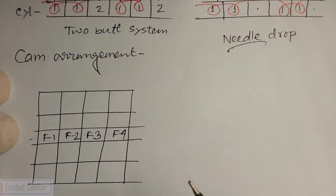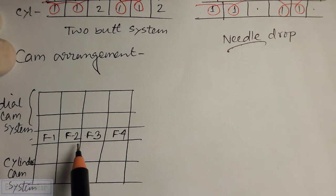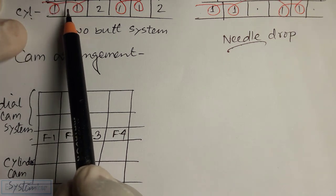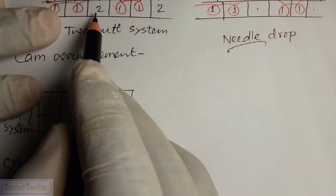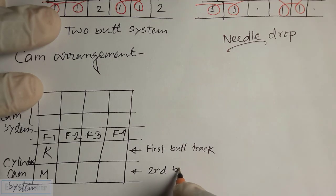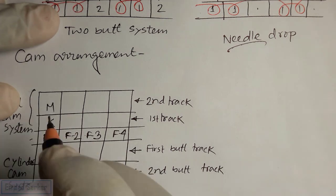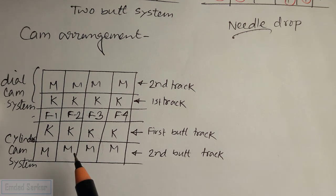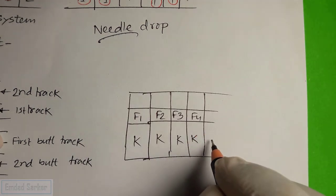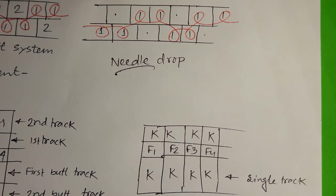In the case of the two-butt system, the cam arrangement or feeder — these are the cylinder cam system. In the case of the first course, and every course is similar here, there are no differences between these four feeder cam systems. In the case of cylinder needles, only butt position one needles are active, so there will be a knit cam; and butt two needles are inactive, so there will be a miss cam. This track is for the first butt track and the second butt track. Similarly, there will be a knit cam and a miss cam — the second butt position needle has no function in this system. In the case of needle drop, all feeders will contain knit cams only, because it is a single track. Thank you very much for watching this video; next time we will meet in another video, inshallah.